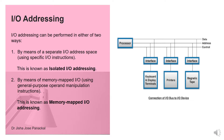We can do I/O addressing in two ways. The first is by means of a separate I/O address space using specific I/O instructions — this is known as isolated I/O addressing. The second method is by means of memory-mapped I/O, using general-purpose operand manipulation instructions — this is known as memory-mapped I/O addressing. In isolated I/O we have a separate I/O bus with separate data, address, and control bus lines.